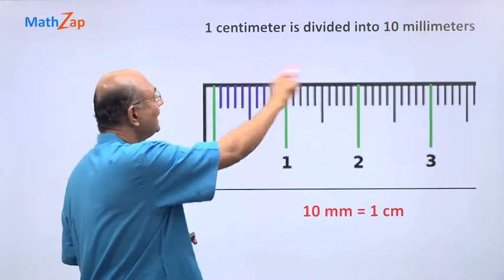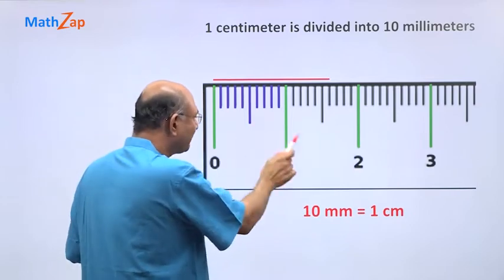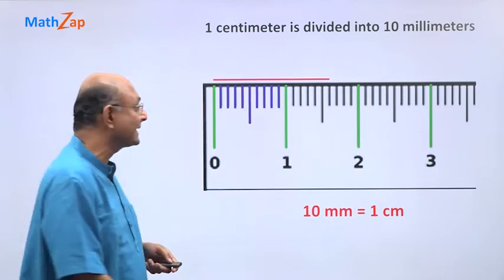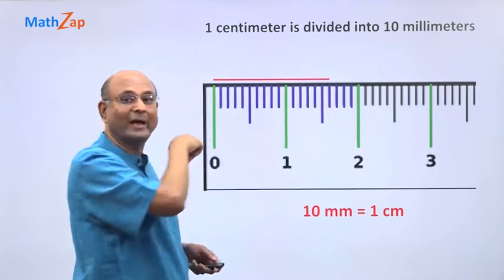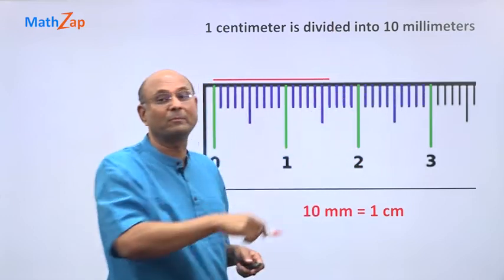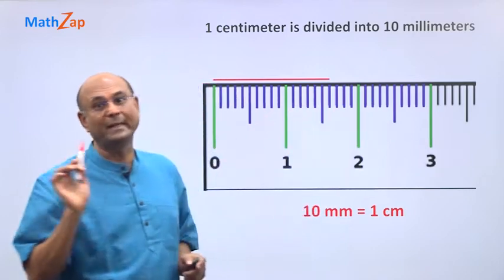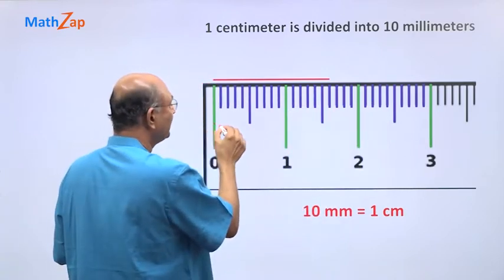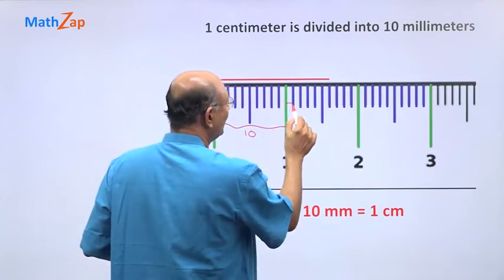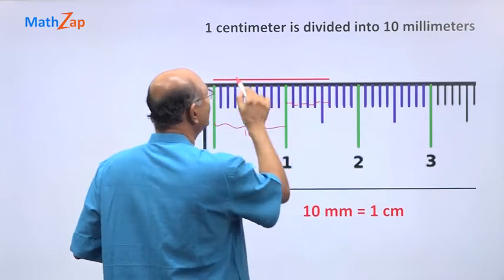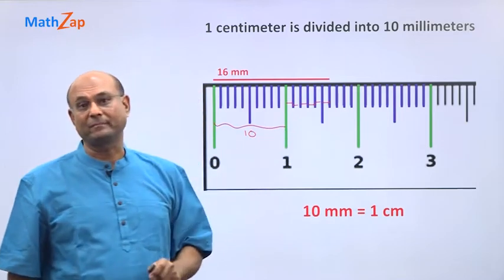Now suppose I had a longer line — how do I measure that? No problem. Just like from 0 to 1, we put the same markings from 1 to 2 and from 2 to 3, breaking each centimeter into 10 equal pieces. Each gap is a millimeter. From here to there we have 10 millimeters, then 11, 12, 13, 14, 15, 16 — so this is 16 millimeters.